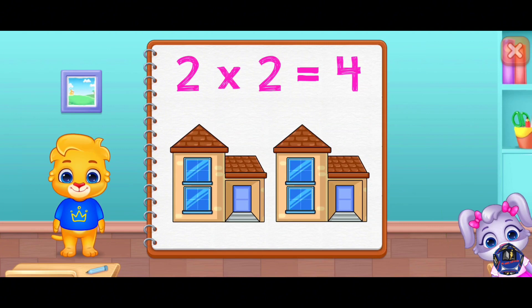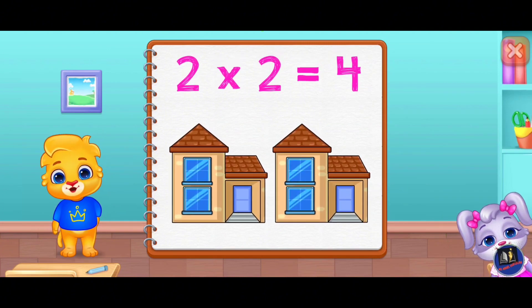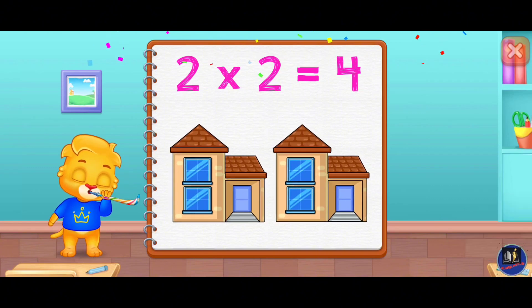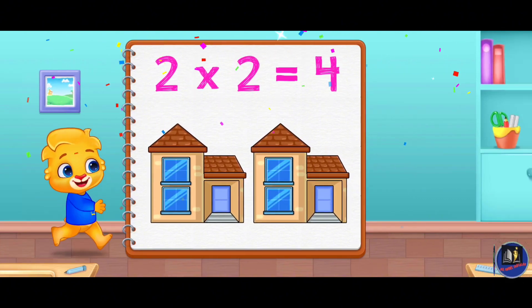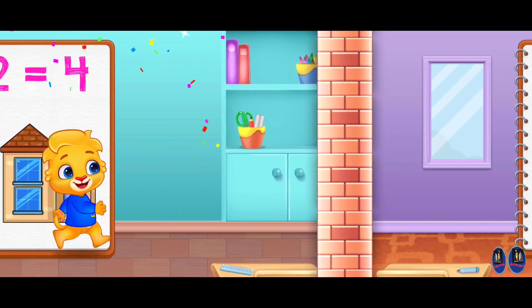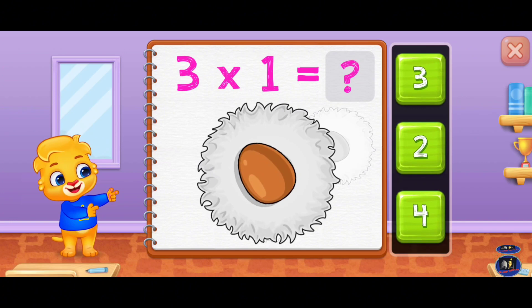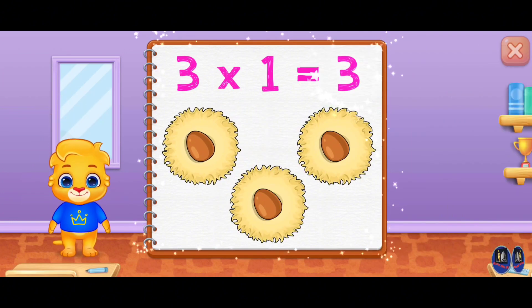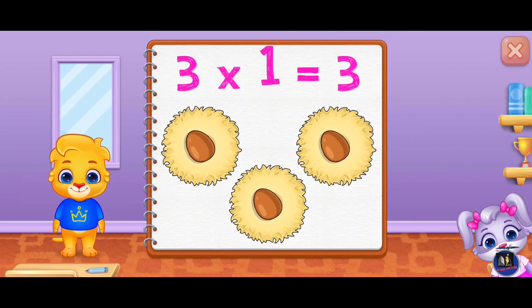Four times two equals four. Three times one equals three.